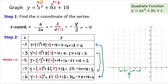Everything checks out, so let's plot the points. The vertex is at (-4, 2). The next point to the right is (-3, 3), and by symmetry the point to the left is (-5, 3). The outermost points are (-2, 6) and (-6, 6).